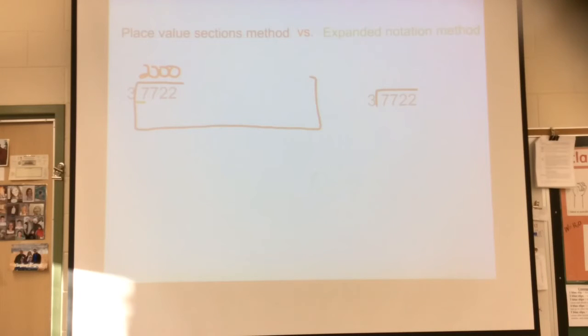So then I multiply that 2,000 I just wrote, times the 3 and I get 6,000. That's why I write that under there. Okay, then I subtract and I get 1,722.